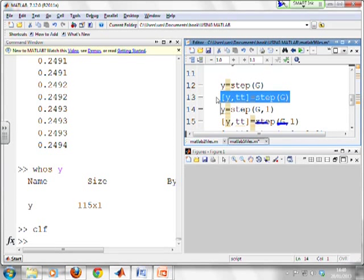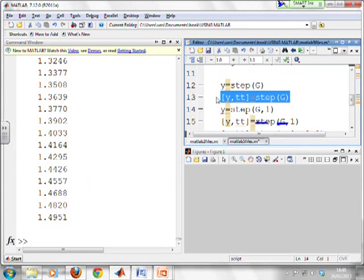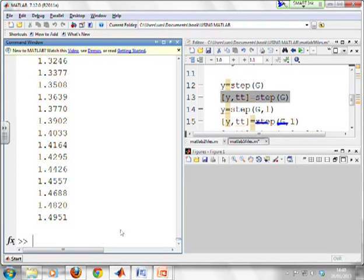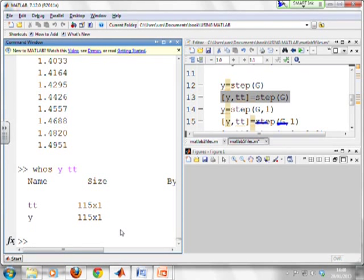If I want to get the times as well, so here I can go [Y,TT] equals step(G). So if I run that, what do you notice? You'll see it's produced all the outputs and all the times, lots and lots of vectors. And if I go whos Y, TT, you'll see there you are, both 115 long. So I've got the outputs and the corresponding times.